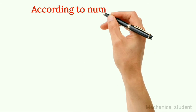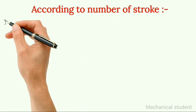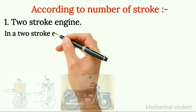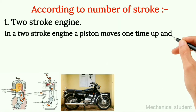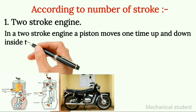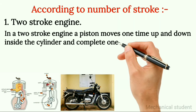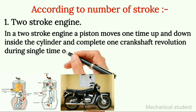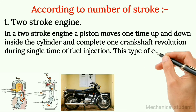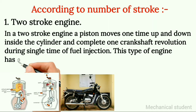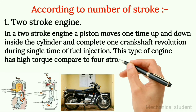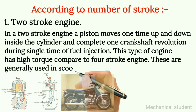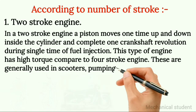According to number of stroke. 1. Two stroke engine. In a two stroke engine, a piston moves one time up and down inside the cylinder and completes one crankshaft revolution during a single time of fuel injection. This type of engine has high torque compared to four stroke engine. These are generally used in scooters, pumping sets, etc.